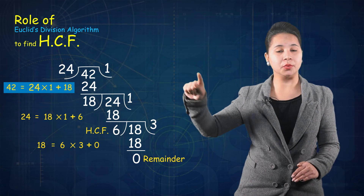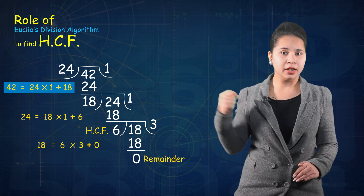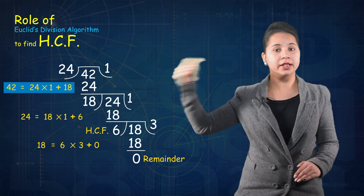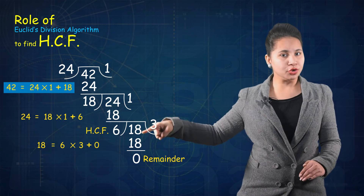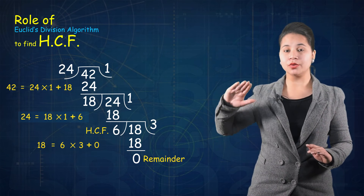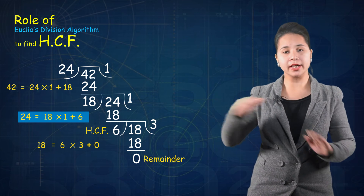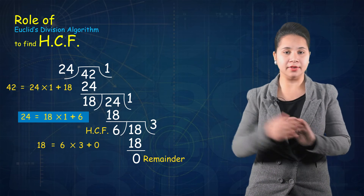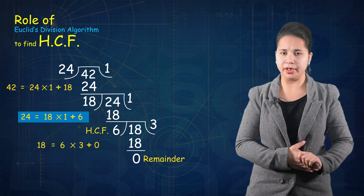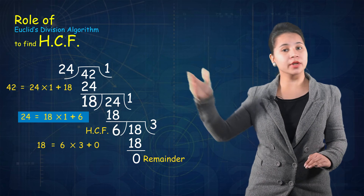Now let us check how Euclid division lemma and Euclid division algorithm are satisfied here. Step 1: 42 = 24 × 1 + 18. Here 42 is the dividend, 24 is the divisor, 1 is the quotient, and the remainder is 18. The remainder was not 0 here, so we further proceeded. In our next step: 24 = 18 × 1 + 6. Here 24 is the dividend and 18 is the divisor, 1 is the quotient and 6 is the remainder.